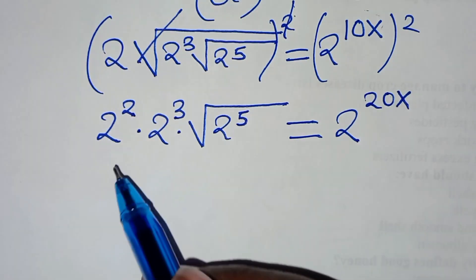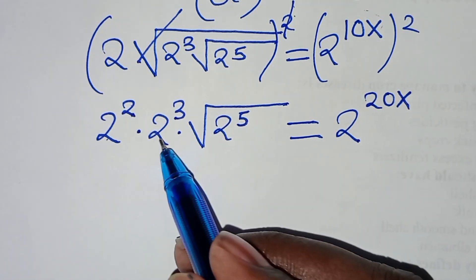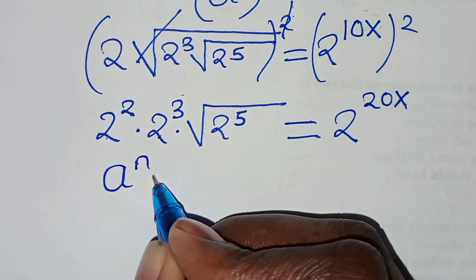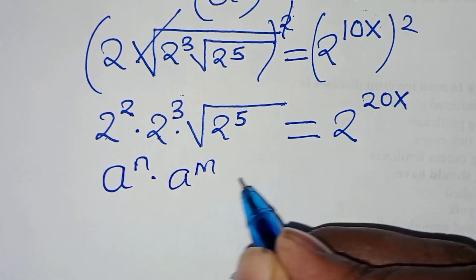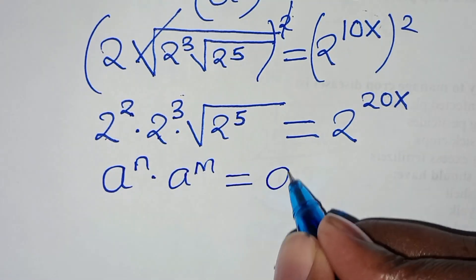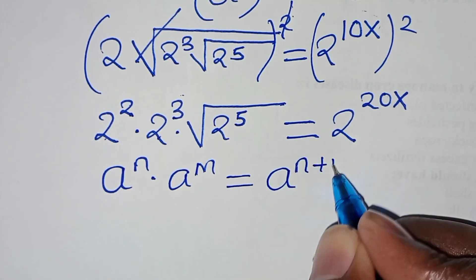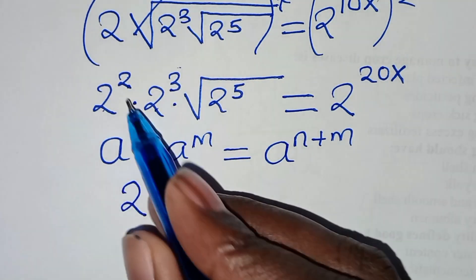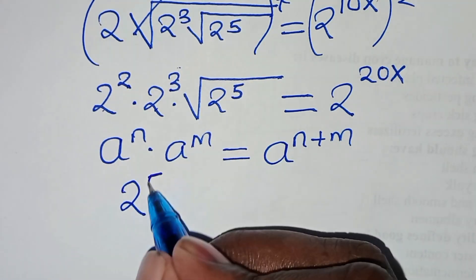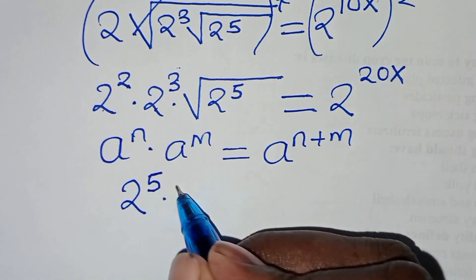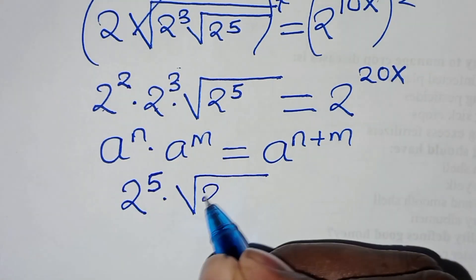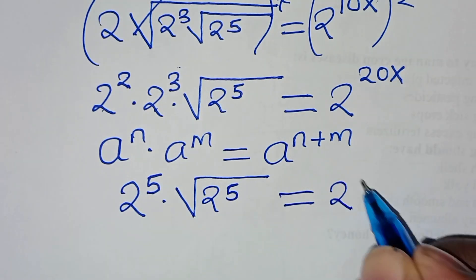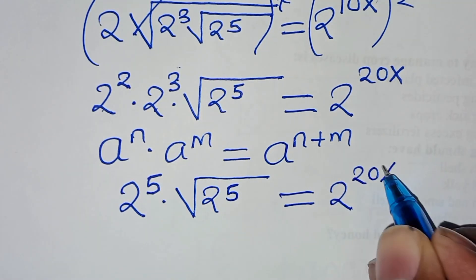The next step: we have 2 to the power of 2 times 2 to the power of 3. This is in the form of a to the power of n times a to the power of m, which can be expressed as a to the power of n plus m. So this implies that we have 2 to the power of 2 plus 3, equal to 5, times square root of 2 to the power of 5. This is equal to 2 to the power of 20x.